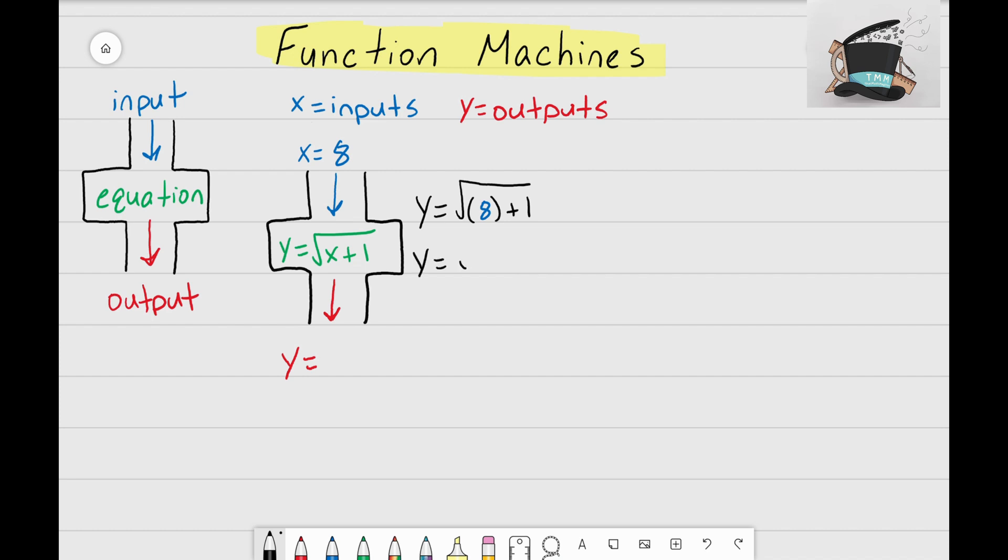Let's work through this problem. I have y equals the square root of 8 plus 1, which makes 9, and my last step is to find out what the square root of 9 is, which is 3. So the output for this function machine is 3 when x equals 8.